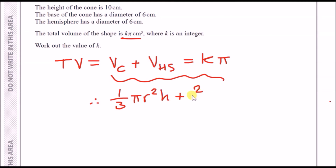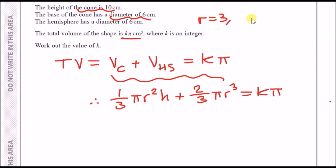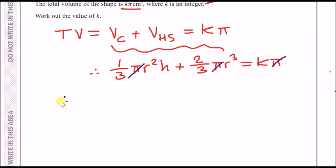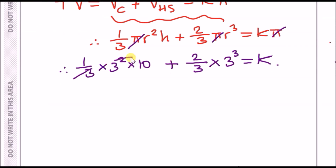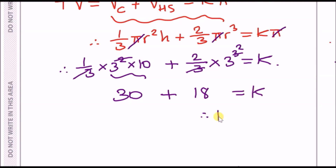Substituting r = 3 and h = 10 and cancelling π: (1/3) × 9 × 10 + (2/3) × 27 = k. Simplifying: the first term gives 30 and the second gives 18, so k = 30 + 18 = 48.